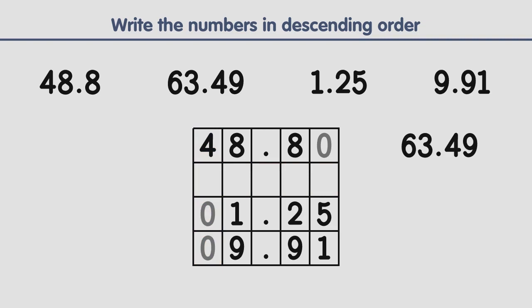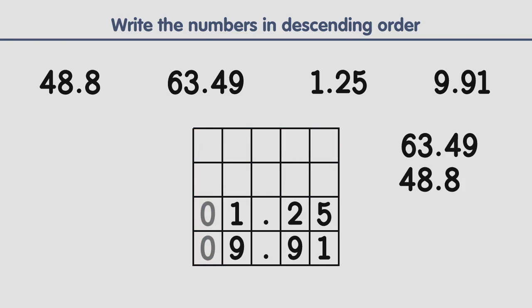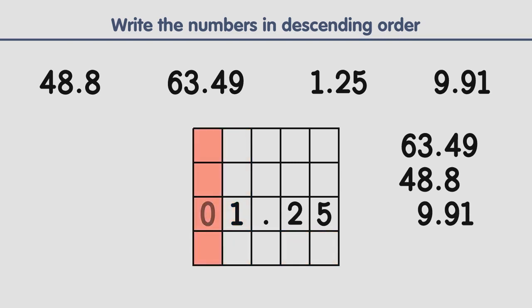We do the same with the remaining numbers. Now the largest digit in the first column is 4, so this is the next number in order. Now we have 2 numbers that start with the same digit: 0. When this happens, we have to look at the next column — in this case, the second column. We have 1 and 9. 9 is greater than 1, so this is the next number in order. The last number left is the smallest number.